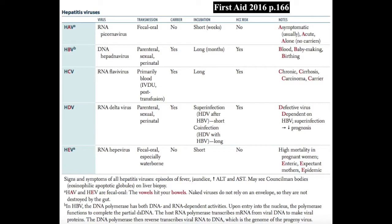Hepatitis E virus is an RNA hepivirus transmitted enterically, and it causes waterborne epidemics. It resembles hepatitis A in its course, severity, and incubation — so it's more acute and less severe. However, we do see a high mortality rate in pregnant women. For hepatitis E, remember your E's: enteric, expectant mothers, and epidemics.